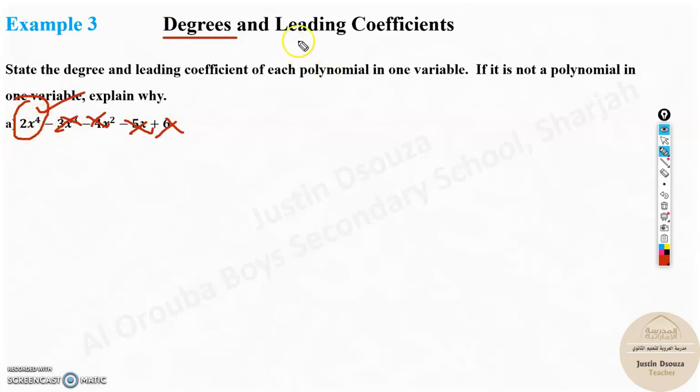This is very important. So the degree is the highest power, that is x to the power 4. And the leading coefficient is whatever is the number beside the highest degree, that is 2. So in this case, the degree is 4 and the leading coefficient is 2. Moving on to the next one.